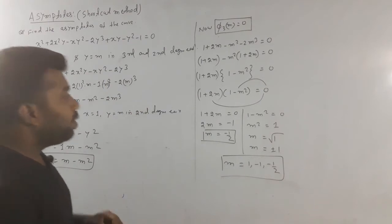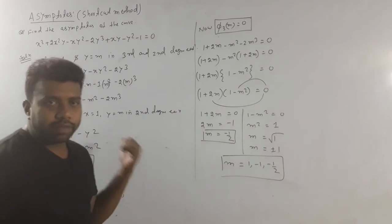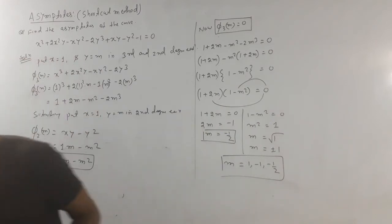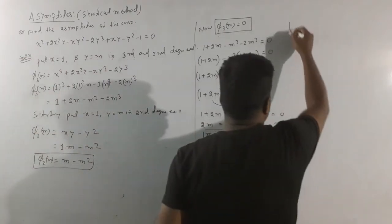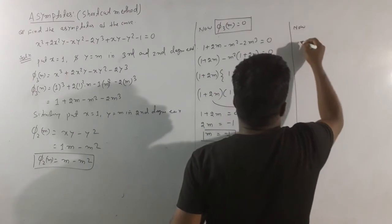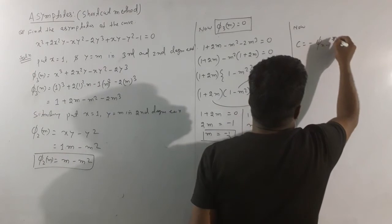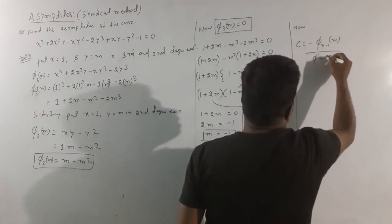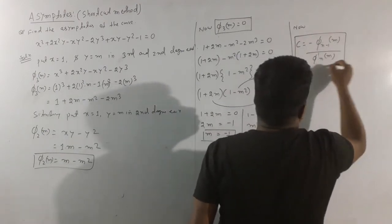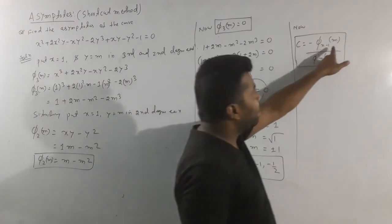If we find the m values, then we use the shortcode method formula to find c. The formula is: c = -φₙ₋₁(m) / φ'ₙ(m), where φ'ₙ is the derivative of φₙ. Here n = 3, so the formula becomes c = -φ₂(m) / φ'₃(m).